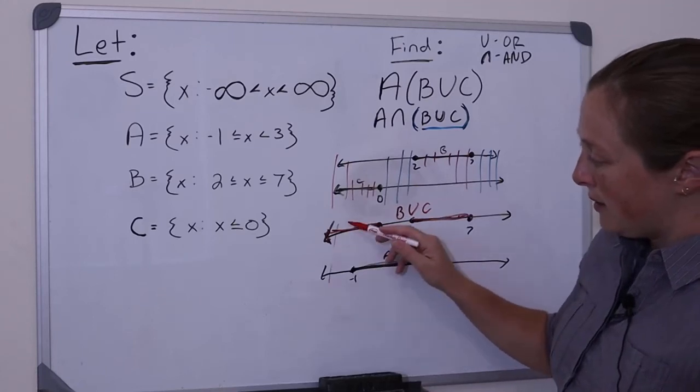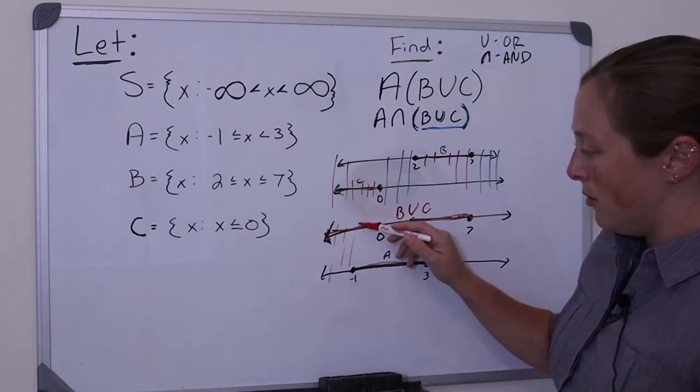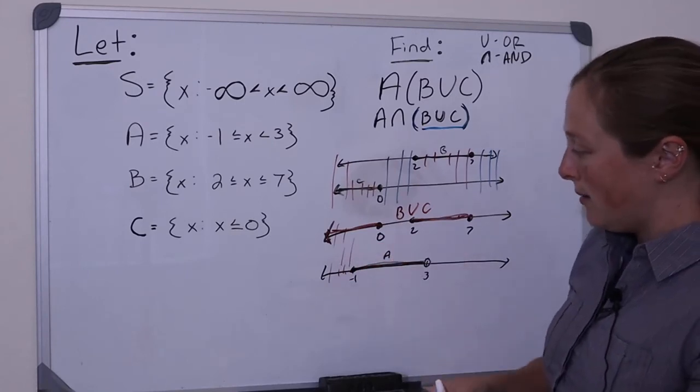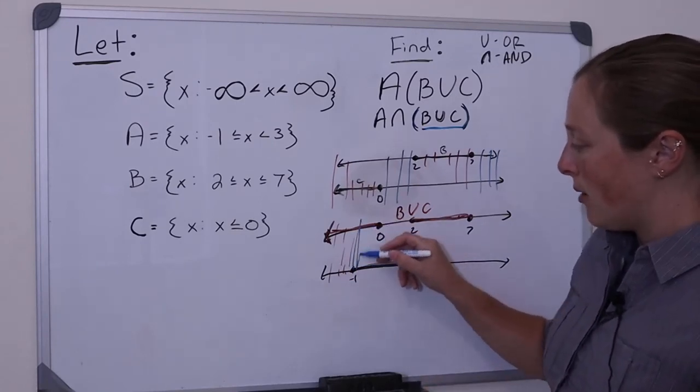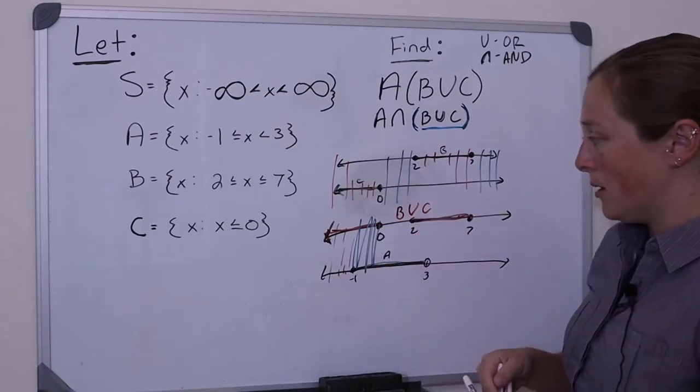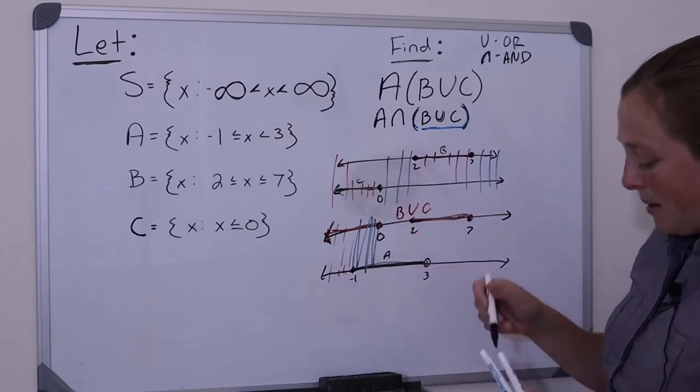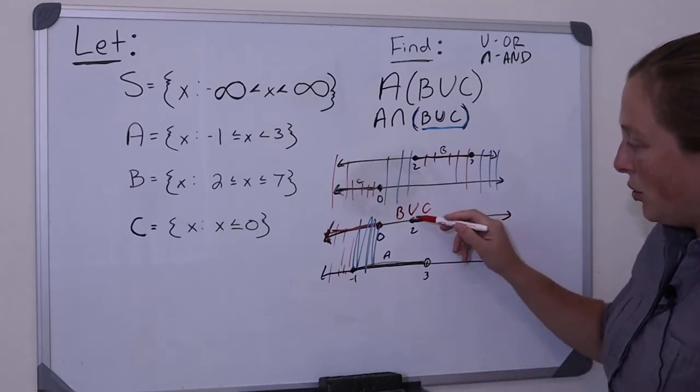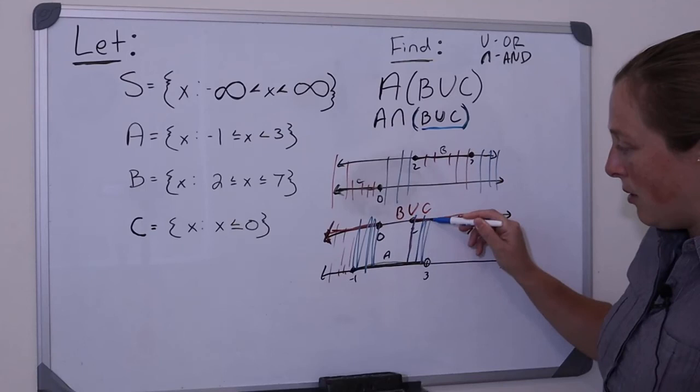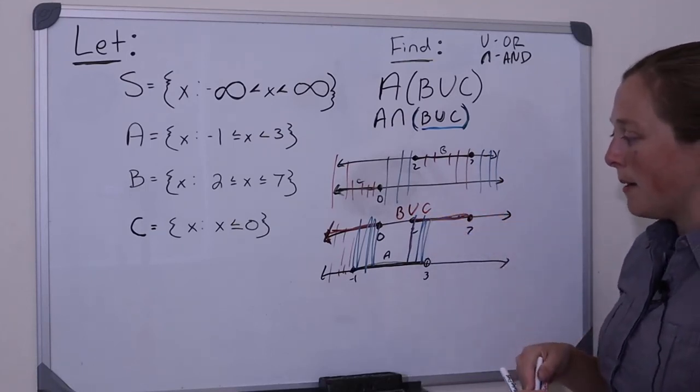So down here, I don't belong to both, right? Because I don't belong to A. Once I get to negative 1, now I belong to both. Until I get to 0, now I don't belong to both. And I get picked up again at 2, and now I belong to both until I get to 3 and I don't belong to both.